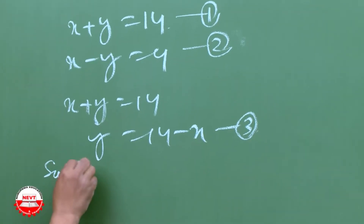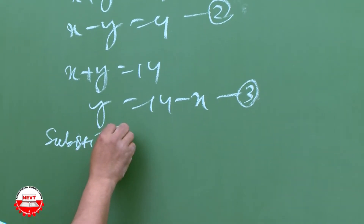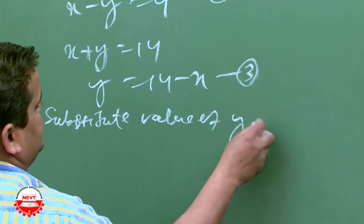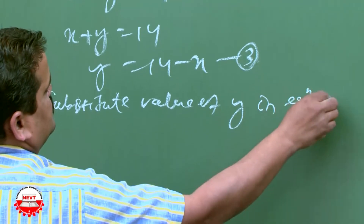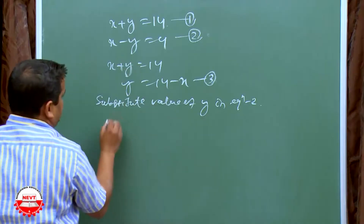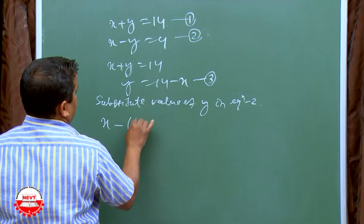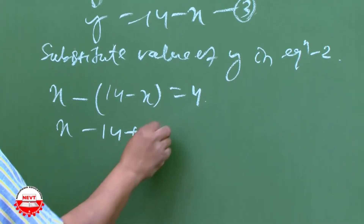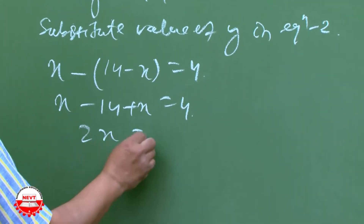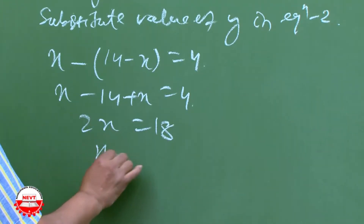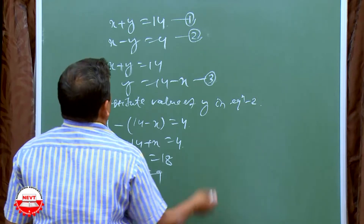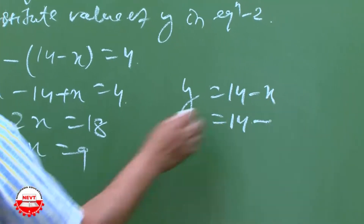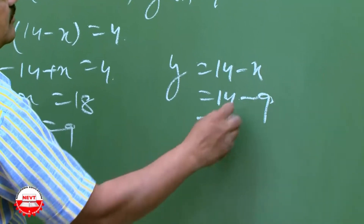Now substitute the value of Y from equation 3 into equation 2. We get X minus (14 minus X) is equal to 4, which gives X minus 14 plus X is equal to 4, or 2X is equal to 18. Bringing the number to the other side, X is equal to 9. So the value of Y is 14 minus X, which is 14 minus 9, equal to 5.